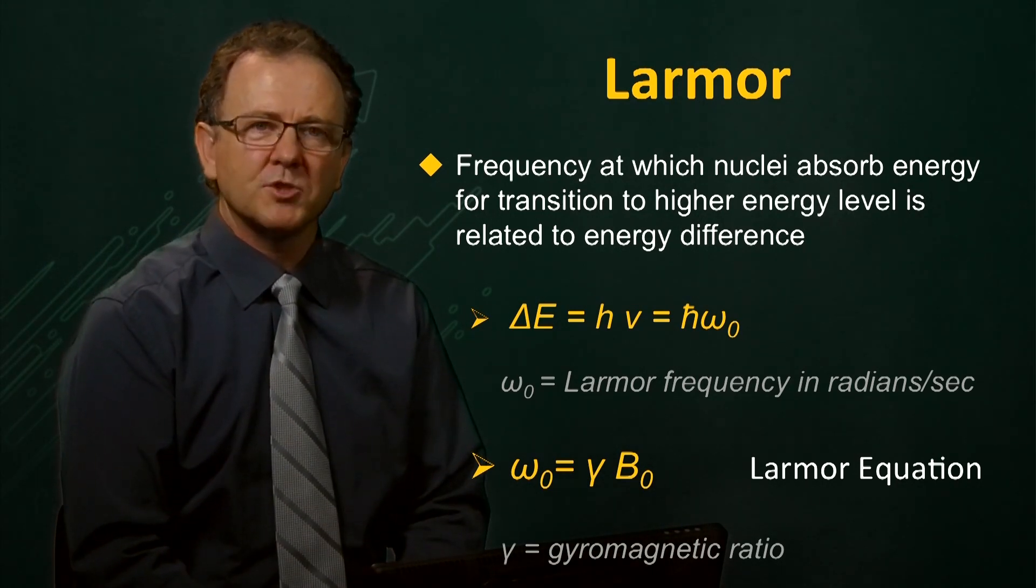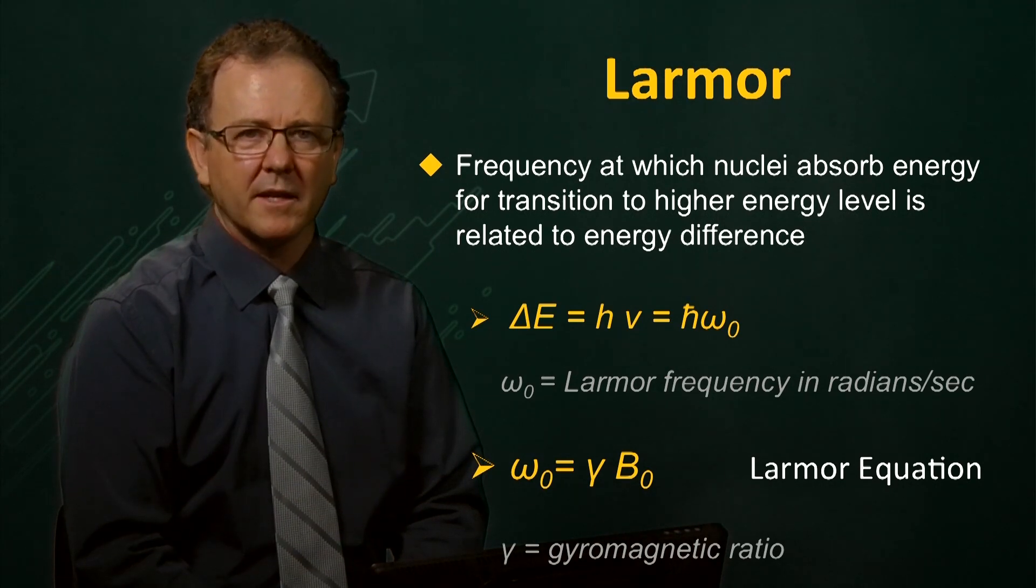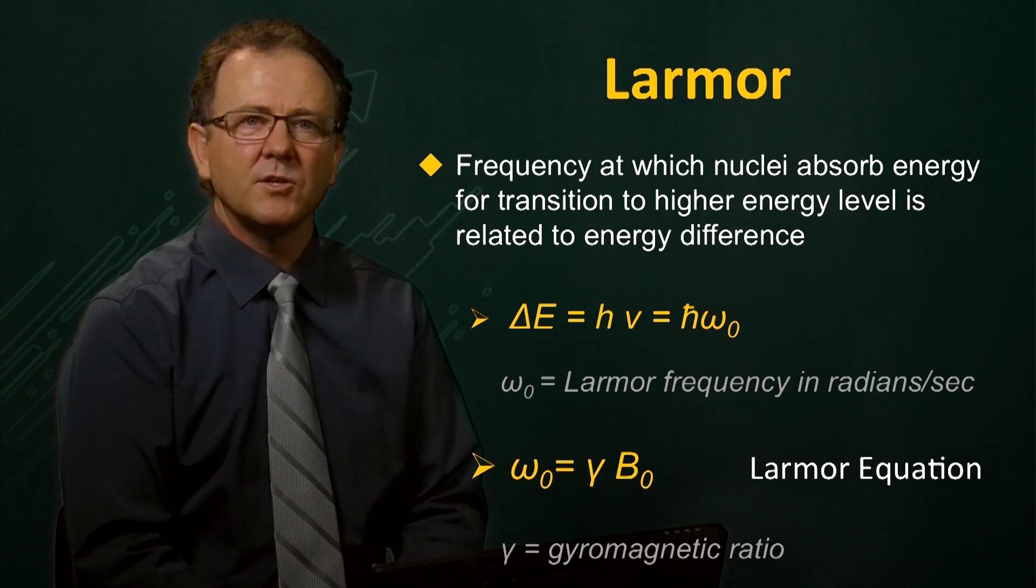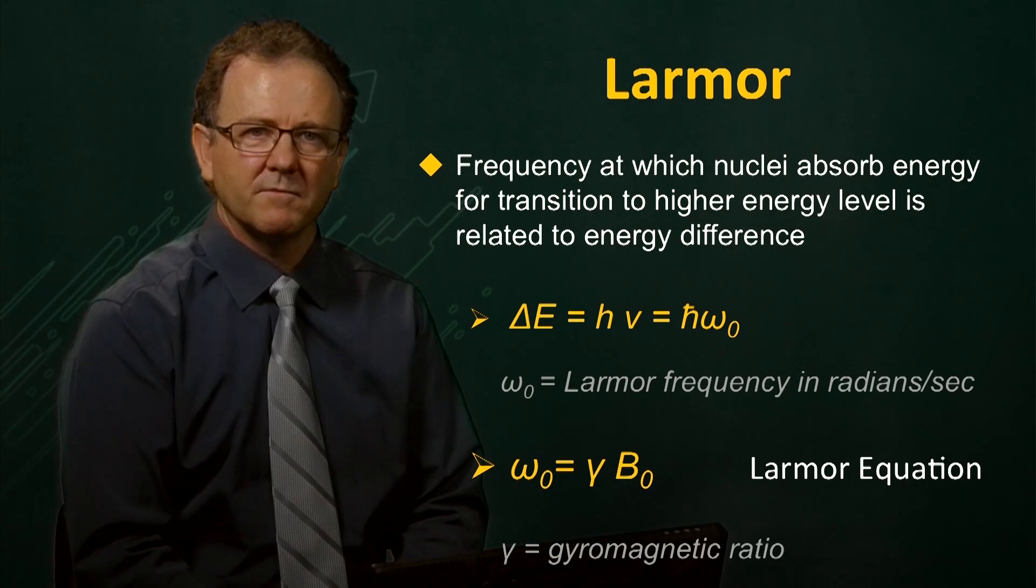The constant of proportionality, gamma, is known as the gyromagnetic ratio and it is a unique characteristic of the nucleus involved.